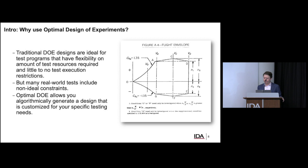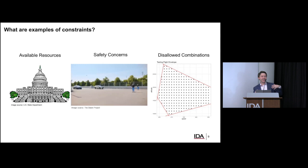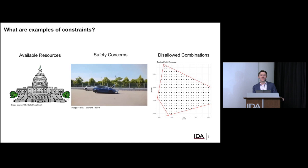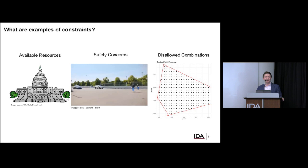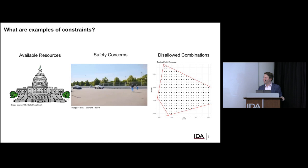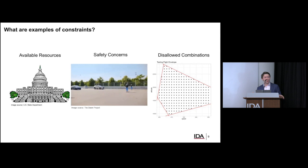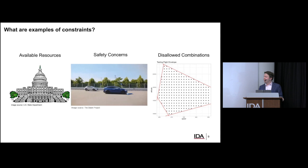Optimal DOE allows you to account for all these types of weird constraints and design an experimental design best for your particular organizational purpose. Some examples of constraints are: available resources — we only get a finite amount of money, so we can't have an infinite number of test points; safety concerns — we want to ensure we don't test in a way that can harm people; and disallowed combinations from just a physical standpoint — like a flight envelope where we can't test at every point because it's physically not possible or the system isn't effective in some regions.